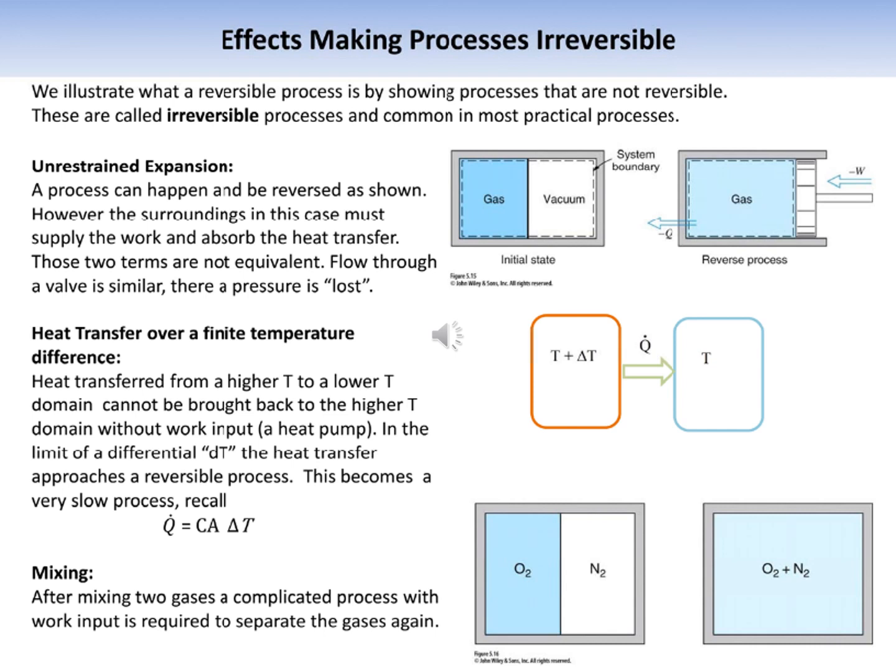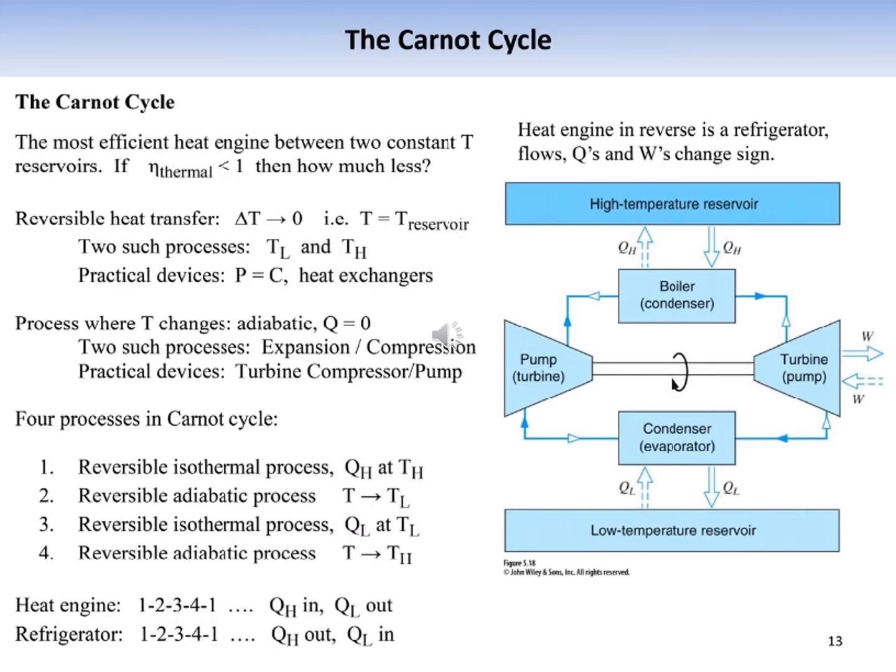Mixing of two different substances is also irreversible. When a membrane separating oxygen and nitrogen breaks, a homogeneous mixture fills the entire volume — a special case of unrestrained expansion. An air separation plant requires work input to recreate pure oxygen and nitrogen. Mixing the same substance at two different states is also irreversible — for example, mixing hot and cold water to produce lukewarm water. The process can be reversed, but requires work input to a heat pump to heat one part and cool the other.